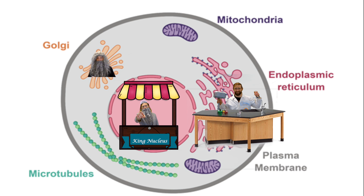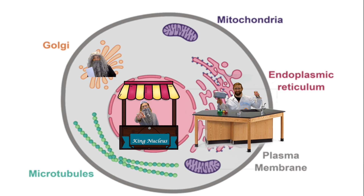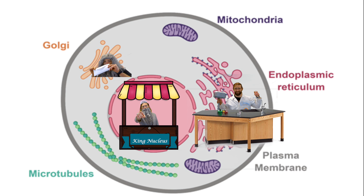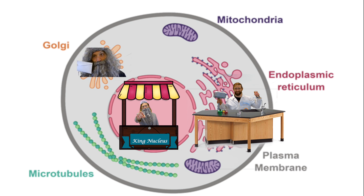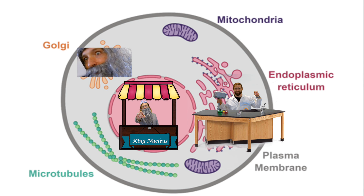The Golgi apparatus sends letters. The king told me to send this message, and I'm going to send it away — carefully folded and delivered to the neighboring kingdom.